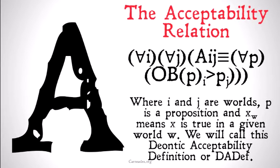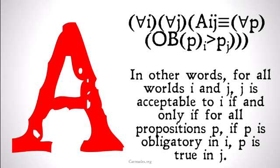We're going to call this the deontic acceptability definition, or D-A-def. In other words, for all worlds I and J, J is acceptable to I if and only if, for all propositions P, if P is obligatory in I, then P is true in J.